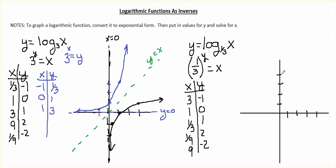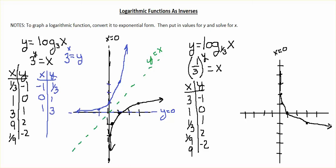Let's graph those values. At x = 3, y = negative 1. At x = 1, y = 0. At x = 1/3, y = 1. At x = 1/9, y = 2. At x = 9, y = negative 2. The vertical asymptote is still at x = 0, because as we plug in more negative y values, x gets closer and closer to 0 — like 1/27 or 1/81 — but never touches it. A logarithmic function with a fractional base between 0 and 1 has this decreasing shape.